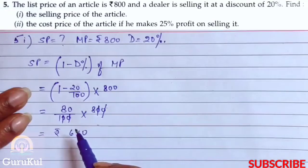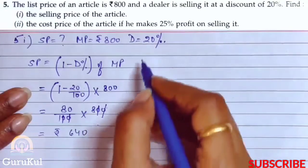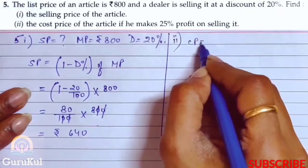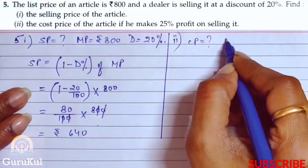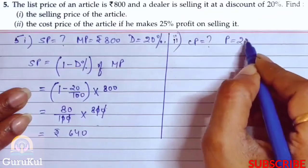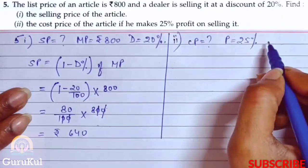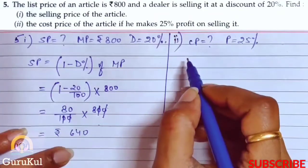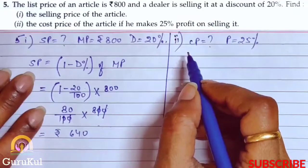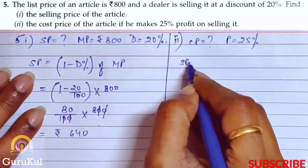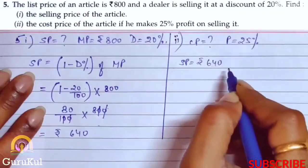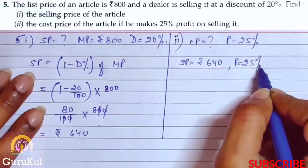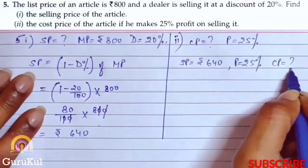Now we will move on to the second part, which is to find the cost price of an article if he makes a profit of 25% on selling it.